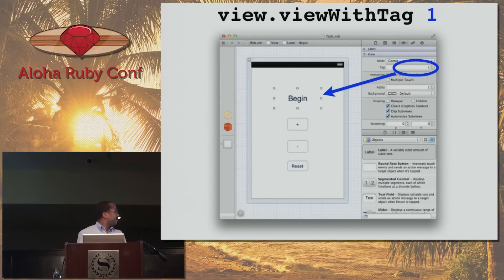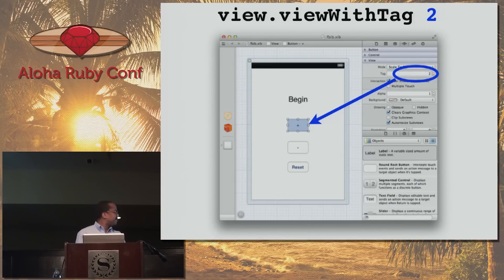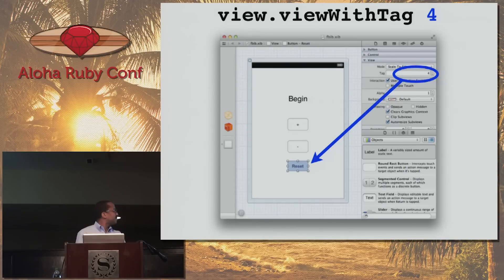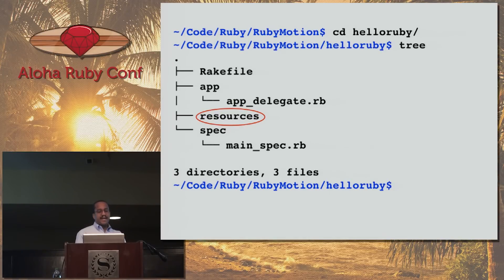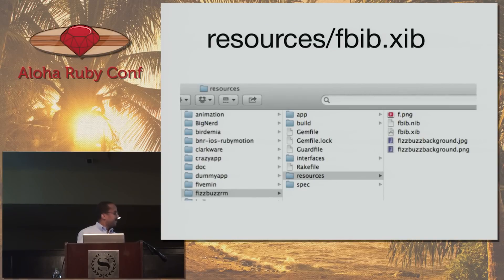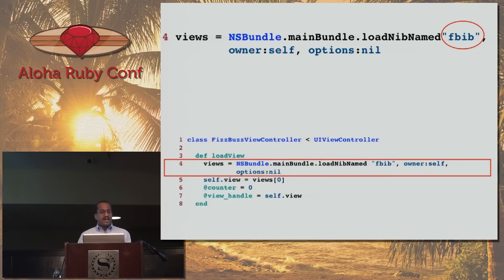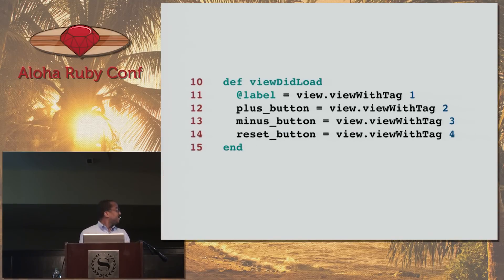I created the interface using Interface Builder, and you assign each element in your interface a tag number. So I assigned one, two, three, four to the label and buttons as you can see in the display. You take the Interface Builder file — it's a .xib file, in our case fb.xib — and drop it into the resources directory. The compiled Interface Builder file is .nib. Here is the line of code in the load view method that tells it to use this Interface Builder file, and here is where we tell it what tags we want to use.